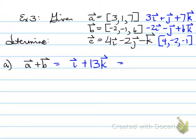How else can this be written? Well, we can take just the component forms. 3 + (-2) is 1, 1 + (-1) is 0, and 7 + 6 is 13. Alright, next part.